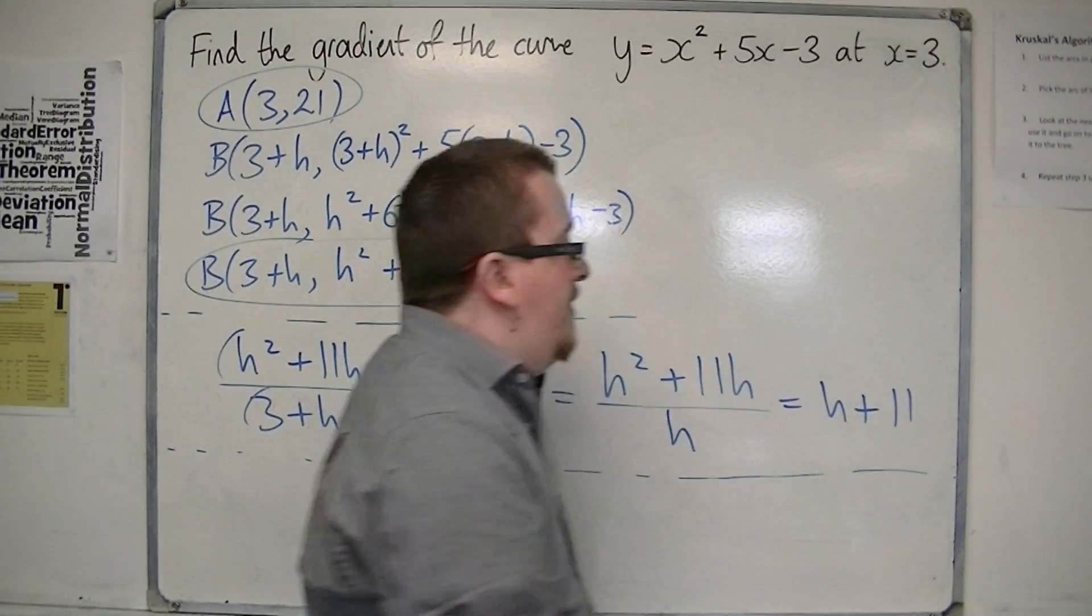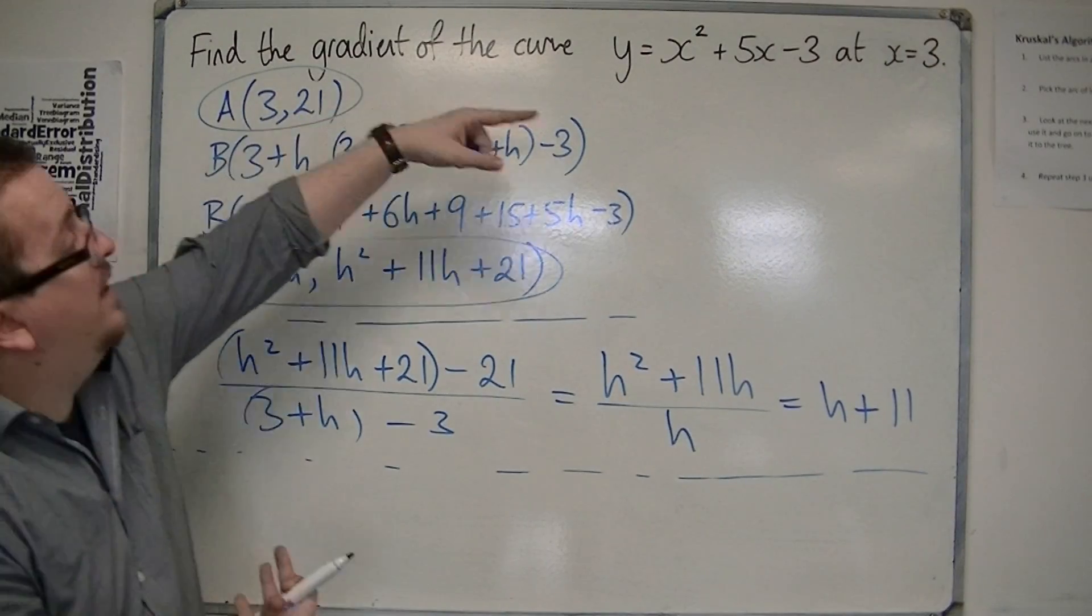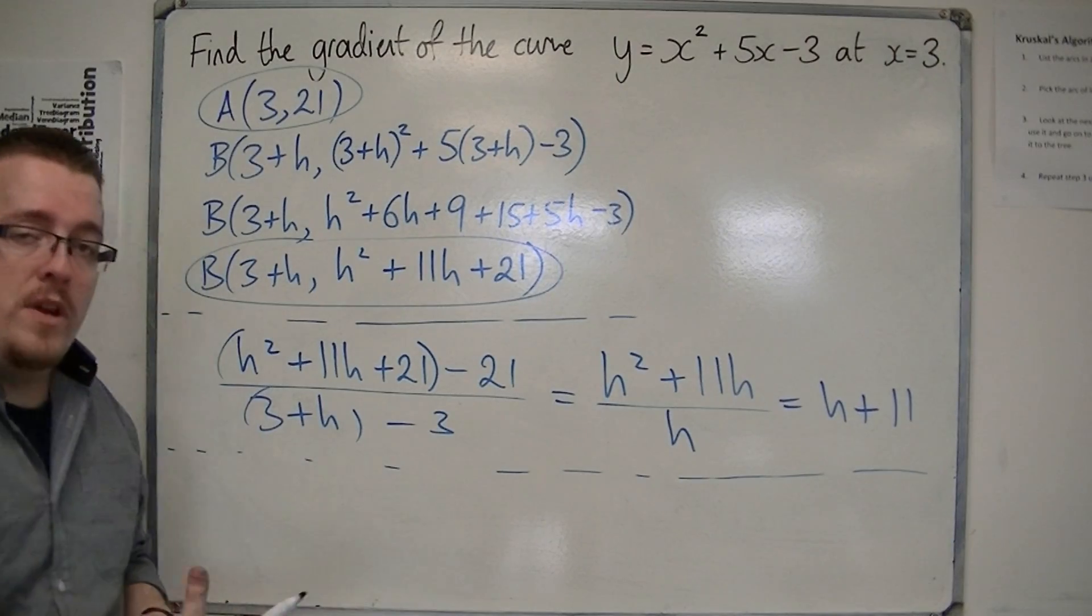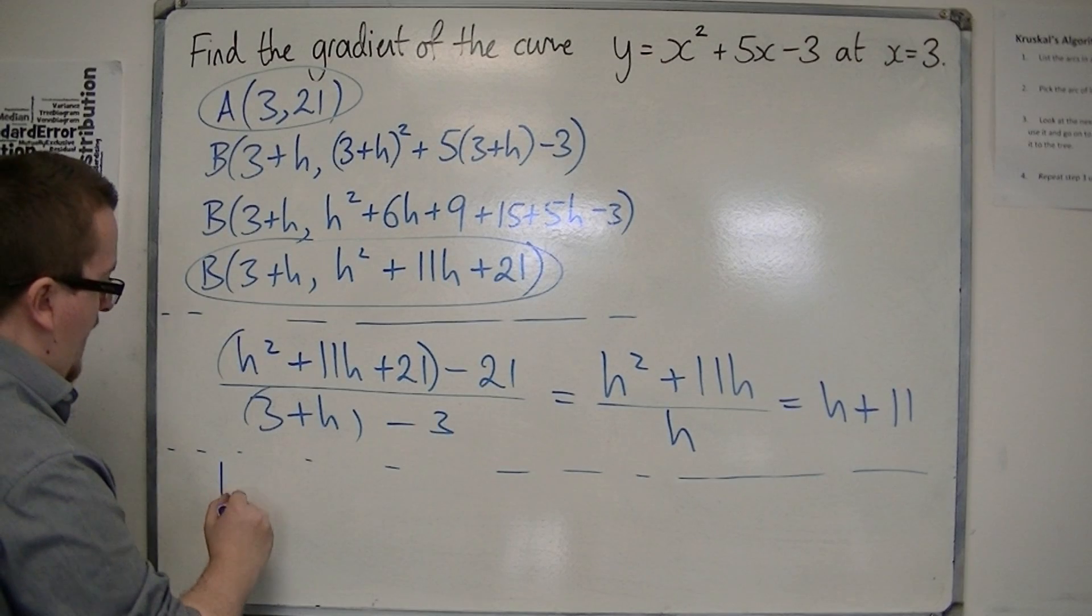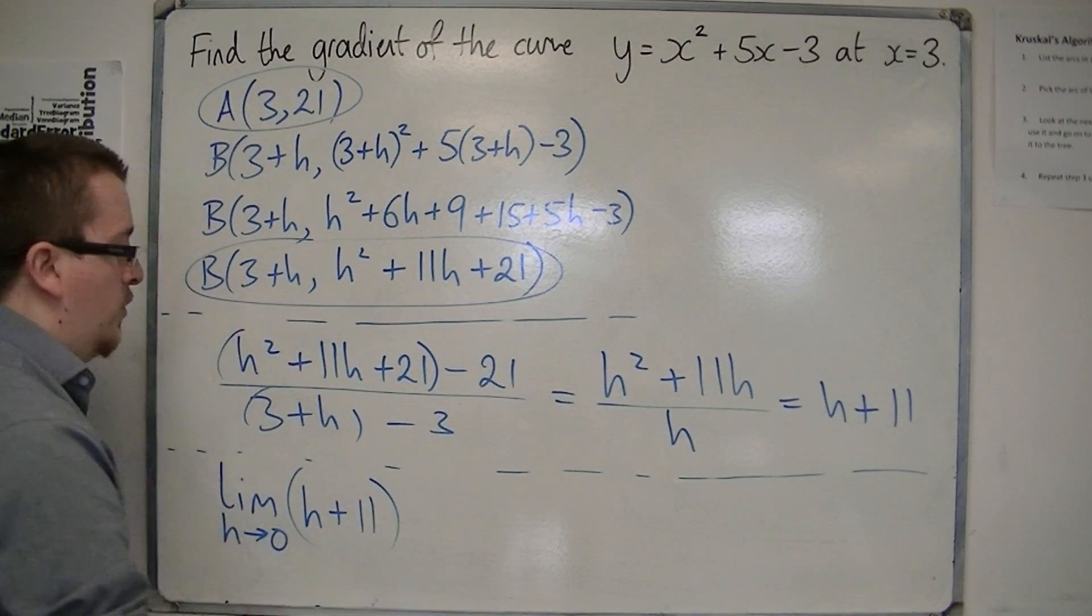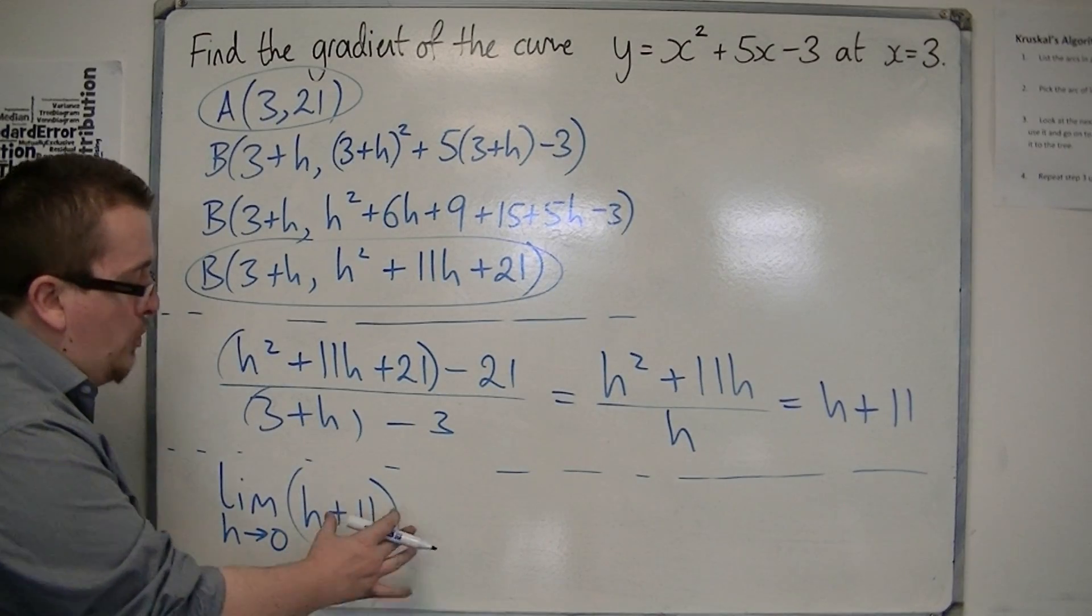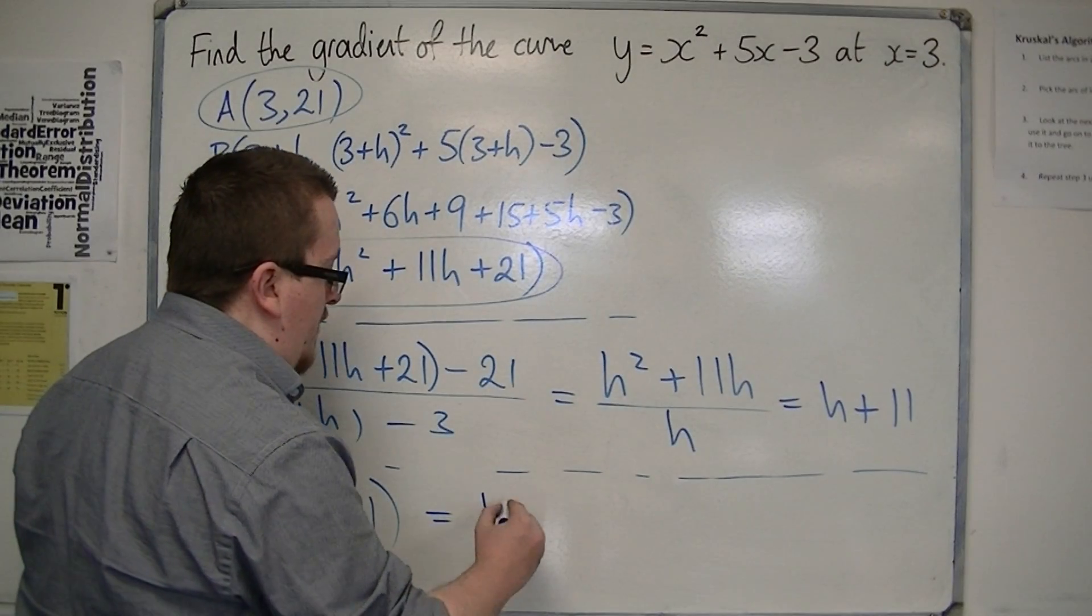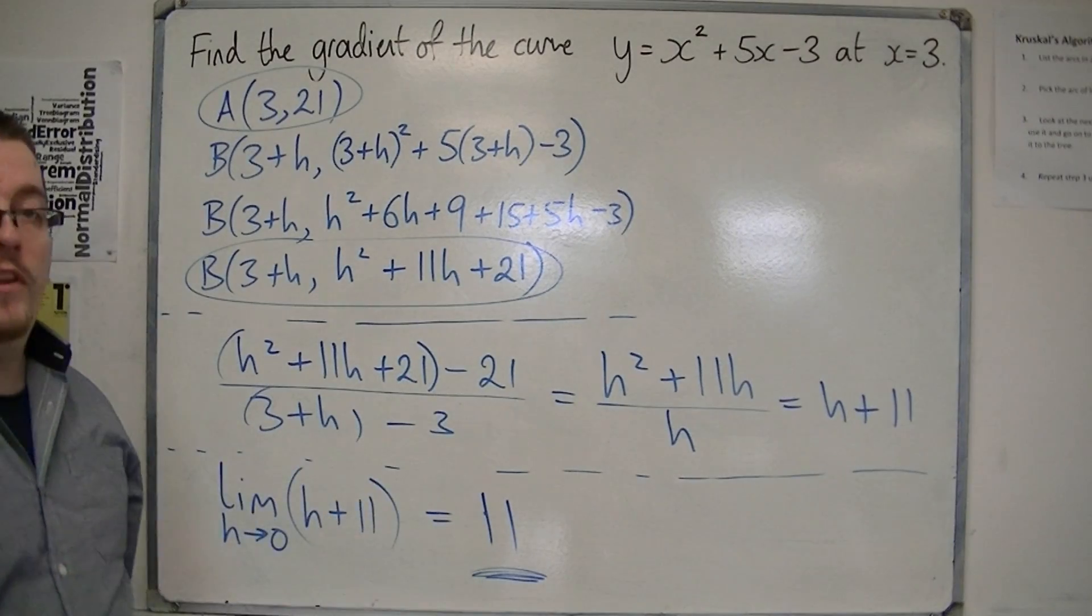So how can this tell us what the gradient of the tangent is, or the gradient of the curve, at x equals 3? Well, to find it at x equals 3, I want to let h tend to 0. So I want the limit of, as h tends to 0, of h plus 11, of that gradient of the chord. So as h gets smaller and smaller, h plus 11 gets closer and closer to just being 11. And so that is the gradient of the curve at x is equal to 3.